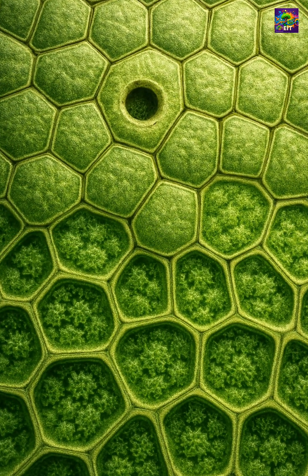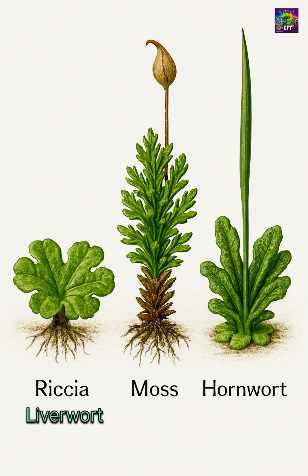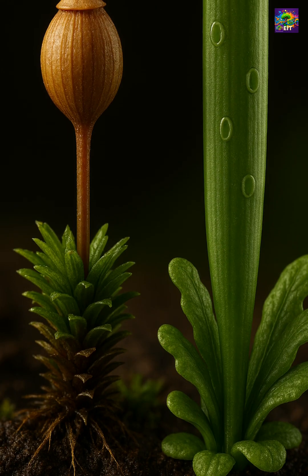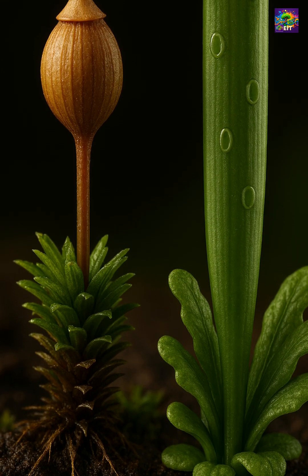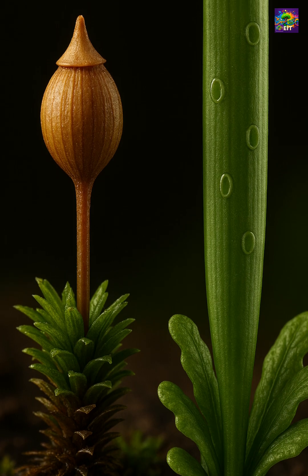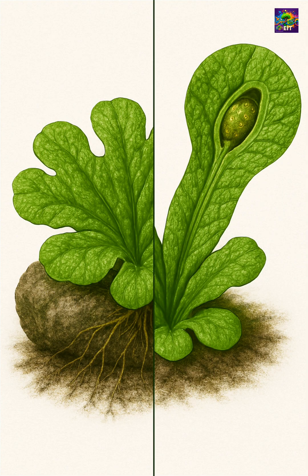In the evolutionary tree, liverworts are often placed as the most basal branch of land plants, meaning they split off before mosses and hornworts. Mosses are somewhat more advanced, with leafy gametophytes and the presence of stomata in their sporophytes, which liverworts usually lack. Hornworts share some modern traits, such as large chloroplasts and a sporophyte that continues to grow for a longer time.